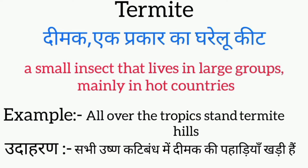Let's understand with an example. All over the tropics, termite hills stand. (Udharan: sabhi tropical band mein dimak ki pahaadiyaan khadhi hain.)